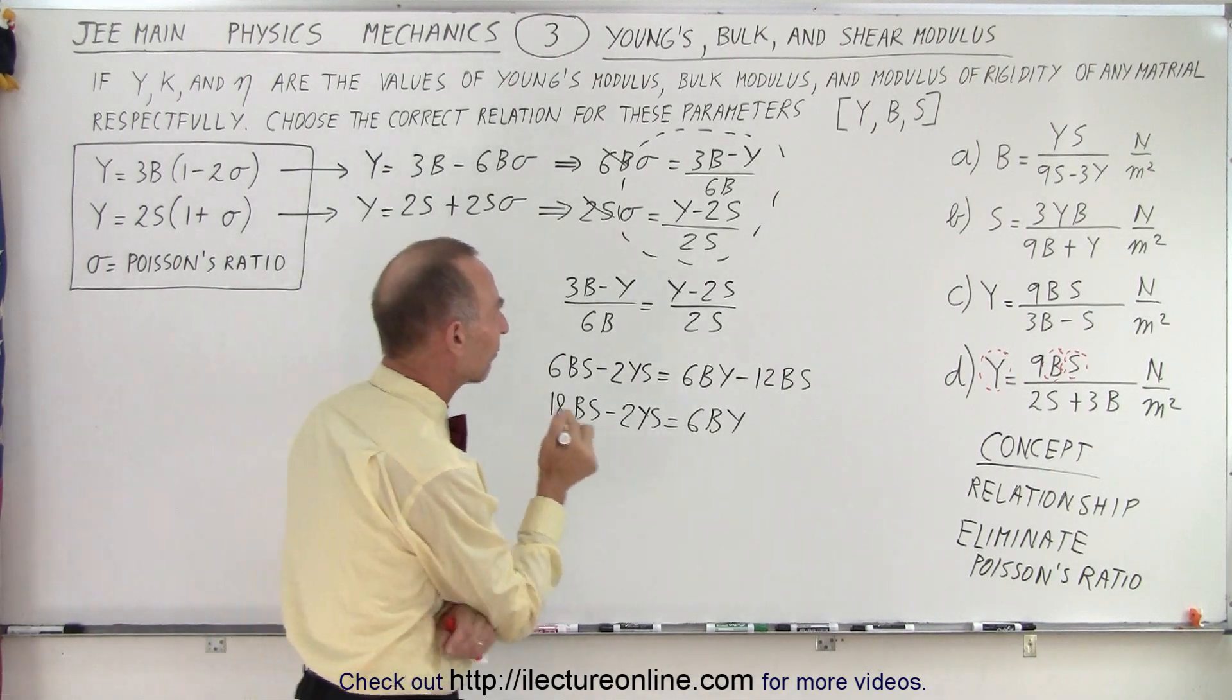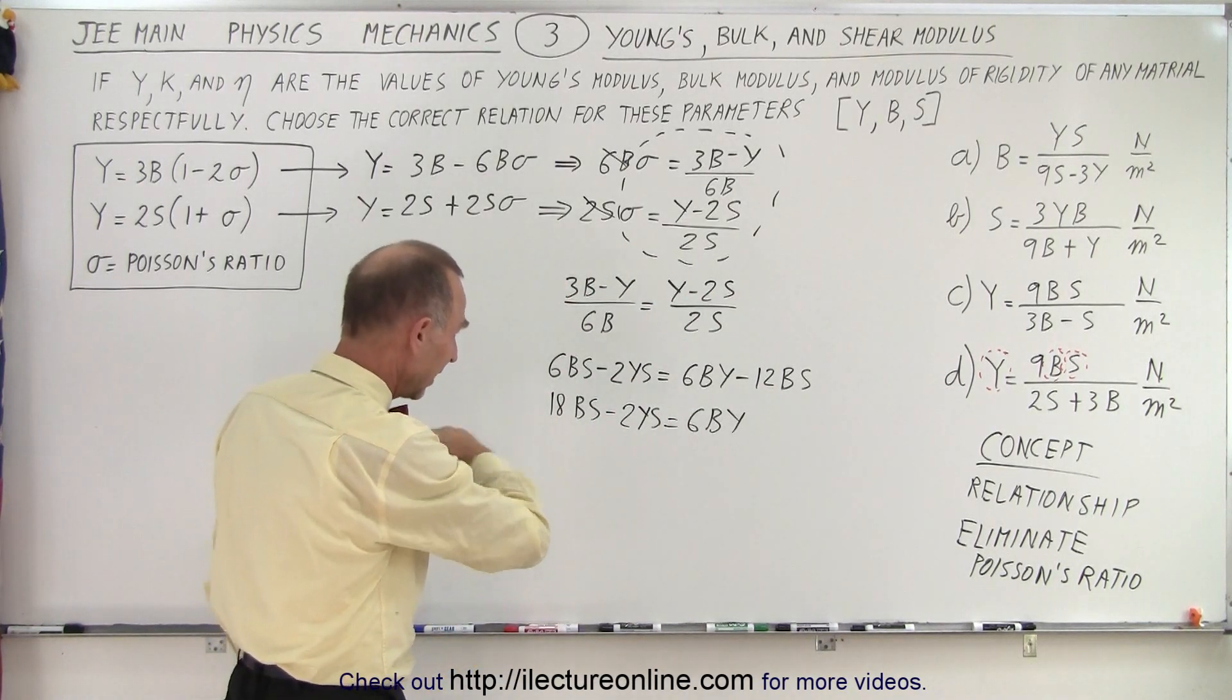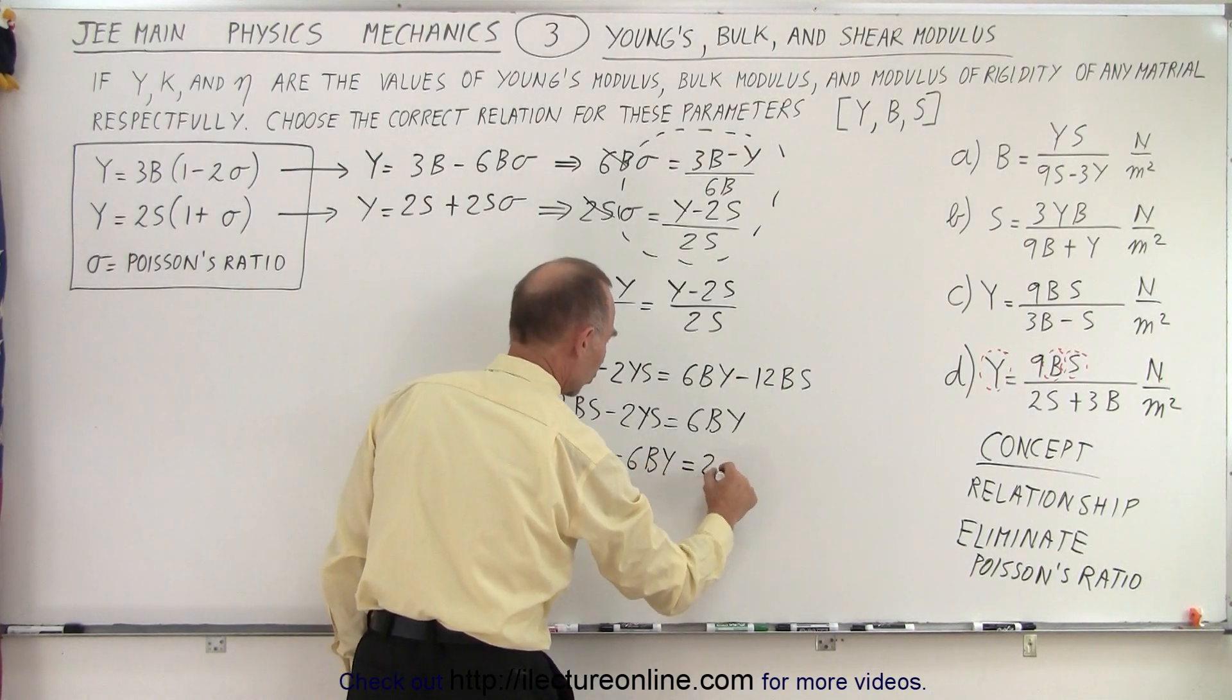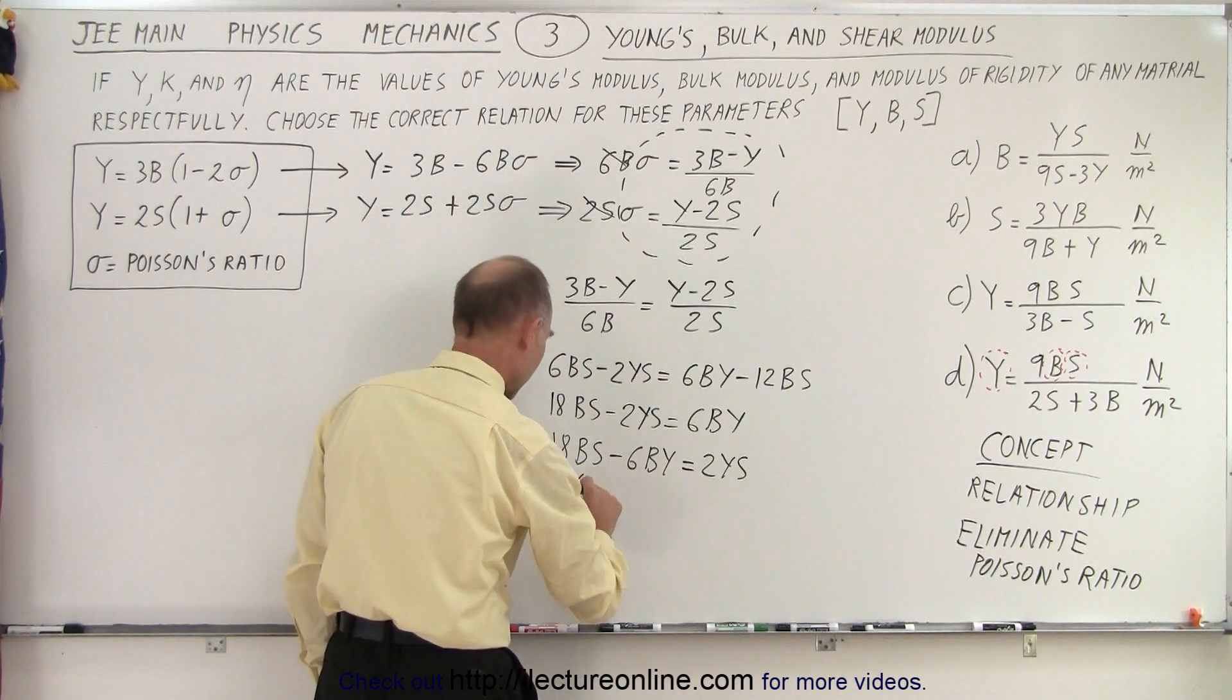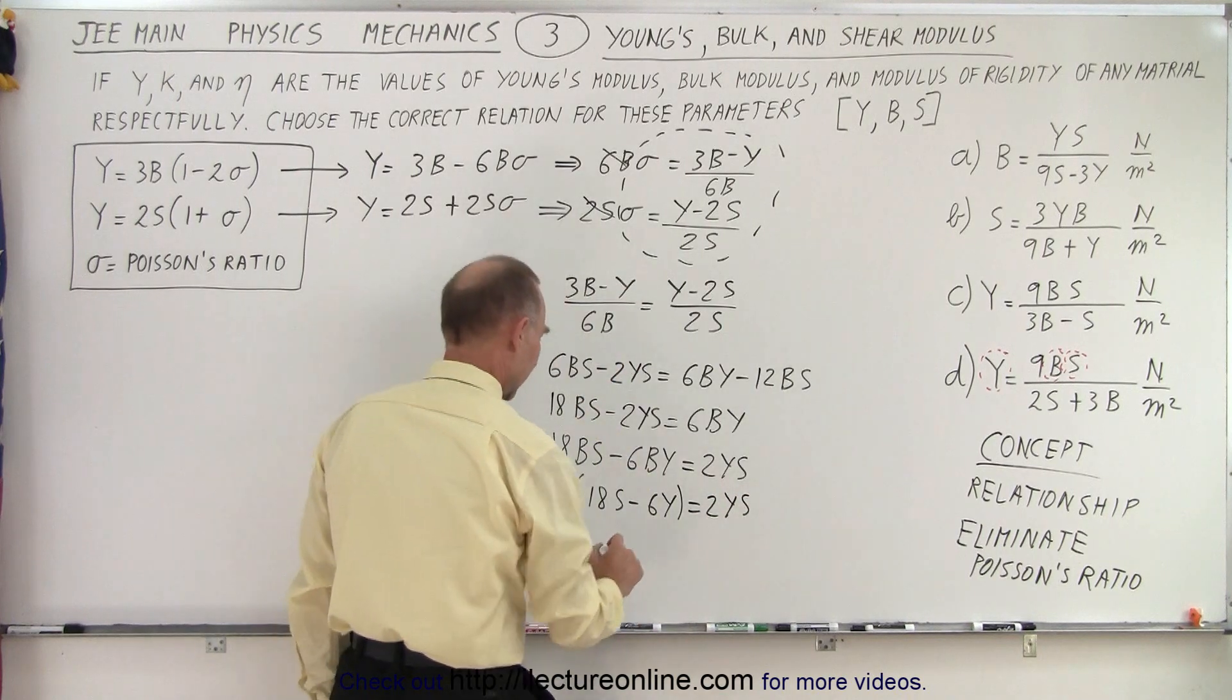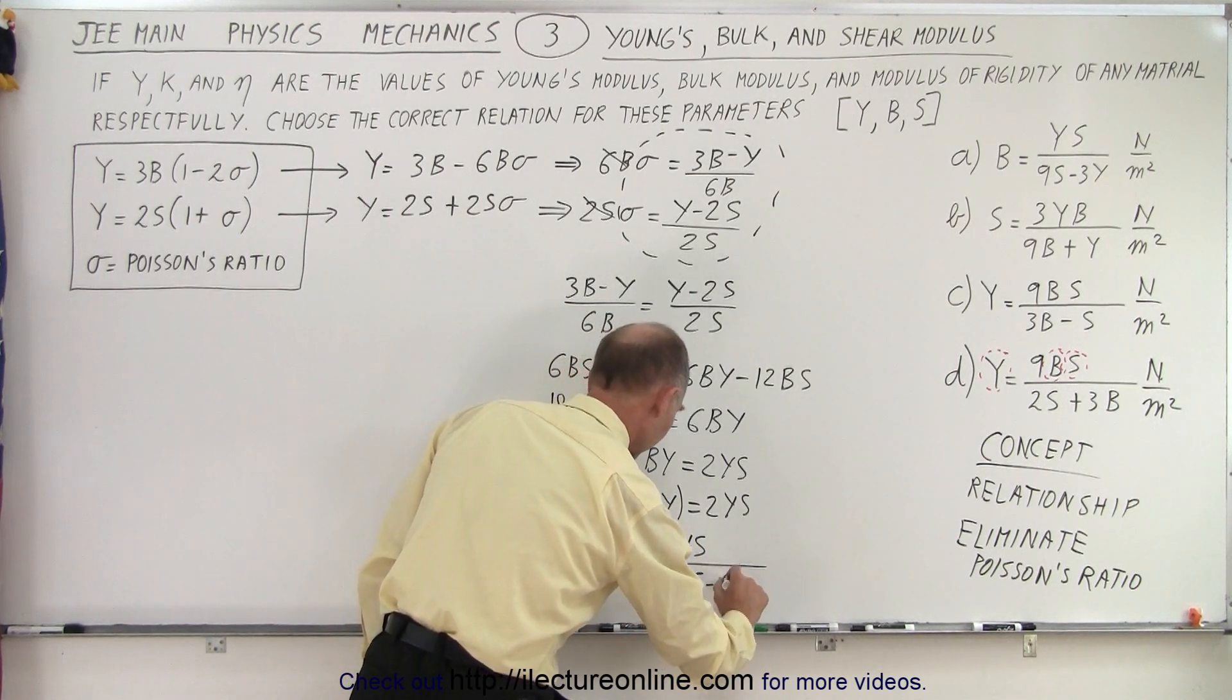So let's see here. We have B, S, and Y on the left. So let's start with the first one. Let's put B on one side and everything else on the other side. So we have 18BS minus 6BY equals 2YS. Factoring out B, we get B times 18S minus 6Y equals 2YS. And so we get B is equal to 2YS divided by 18S minus 6Y.